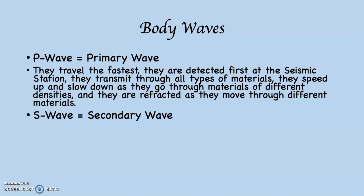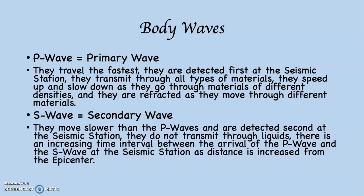The other type of body wave is called the S wave, or secondary wave. They move slower than the P waves and are detected second at the seismic station. They do not transmit through liquids — not water, but liquid rock, what you might call lava but is really magma, so hot that the rock is liquefied. There is also an increasing time interval between the arrival of the P wave and the S wave at the seismic station as distance increases from the epicenter.